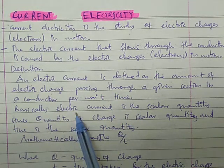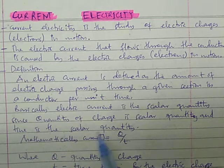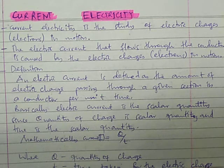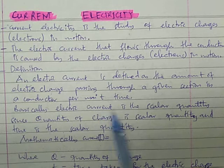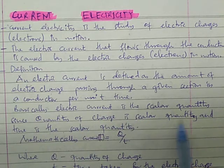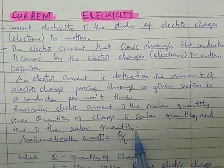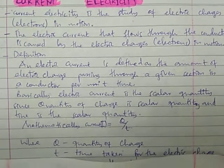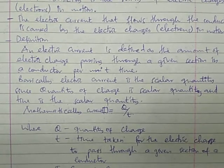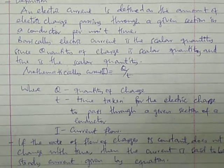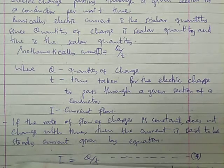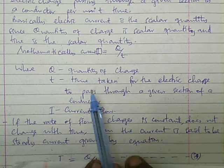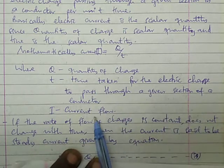The amount of electric charge can be measured by looking at how many electrons are passing through the conductor at that time. The number of electrons will determine the amount of electric charge passing through the conductor. Electric current is a scalar quantity, since quantity of charge is a scalar quantity and time is a scalar quantity. Mathematically, electric current I is equal to Q divided by T, where Q is the quantity of charge and T is the time taken for the electric charge to pass through a given section of the conductor.